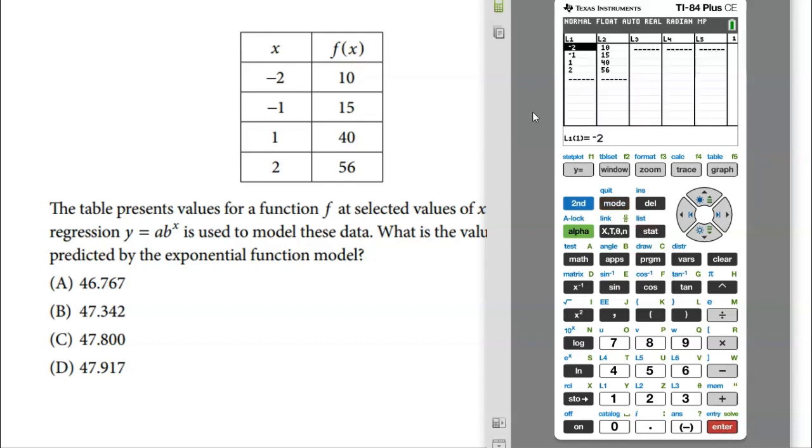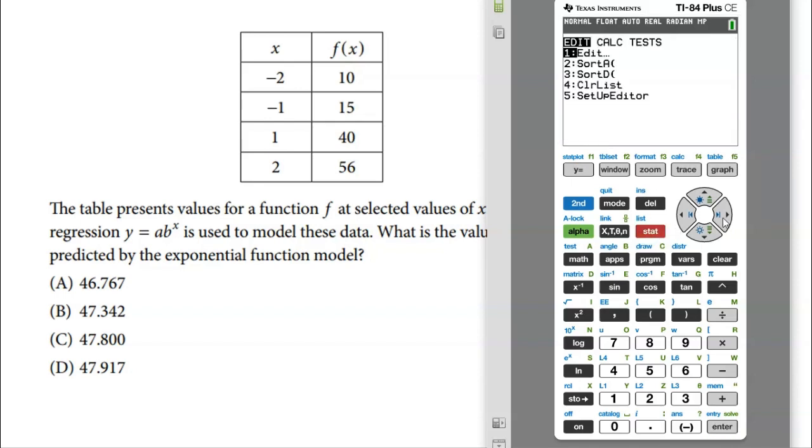First, we have to put the data into our calculators. We're going to hit stat, edit, and then we're going to put the X's in list one and the Y's in list two. So negative two, negative one, one and two, and then the outputs 10, 15, 40, 56. Pretty simple. Then we're going to hit the stat button and we're going to slide over to calculate and we're going to select the exponential model. That's what it asks for, A times B to the X. Going to scroll down a little bit here. It's option zero, exponential regression. And then it's going to ask for the X data that we had in list one. So second number one gets list one. The Y data, second number two for list two. And don't put anything in the frequency list. And then you can actually store it because once I build, I'm going to want to use it, right? I got to plug 1.5 in so I can even have the calculator to help me with that. So to store it, I'm going to hit vars, slide over to Y vars, select function, and select Y1. That's going to automatically take the regression model it builds and put it into Y1 so I could use it.